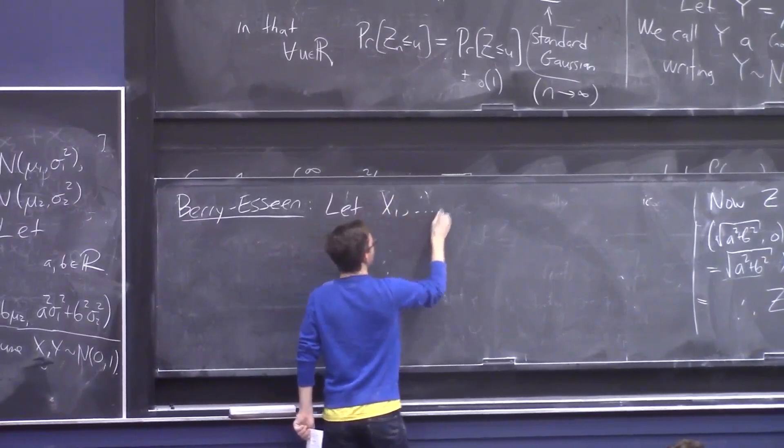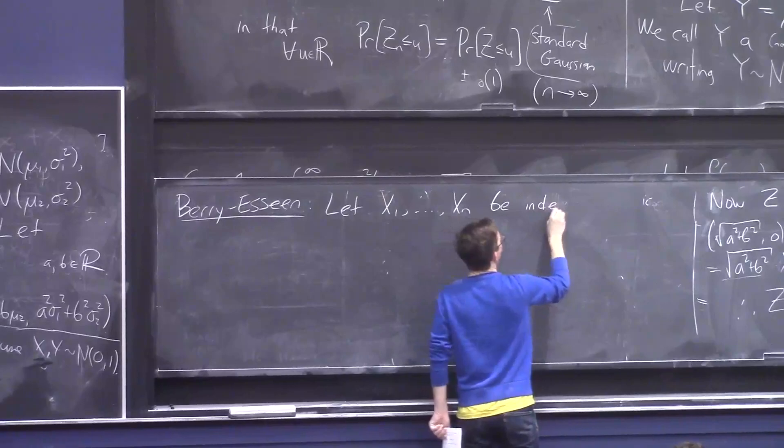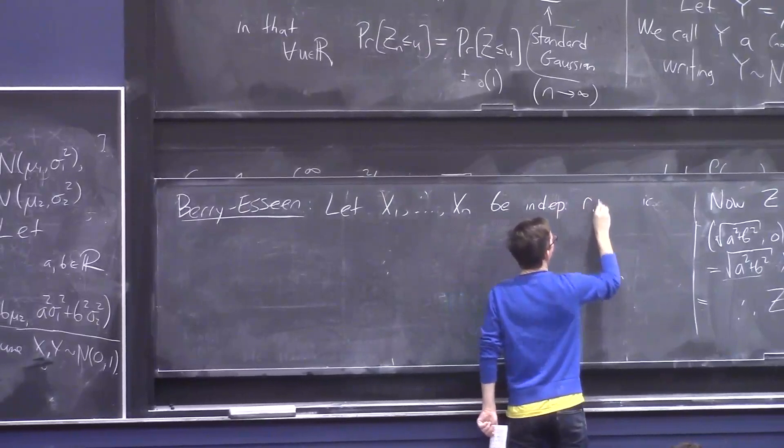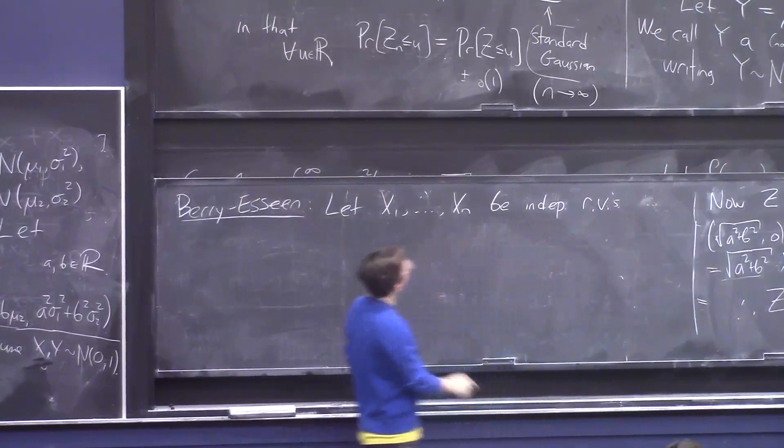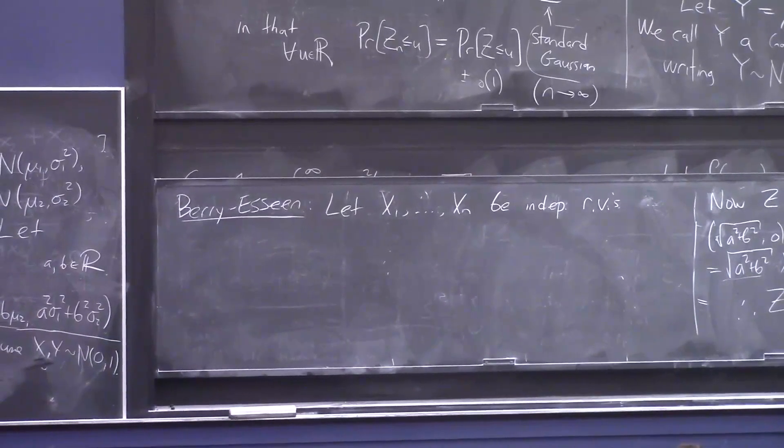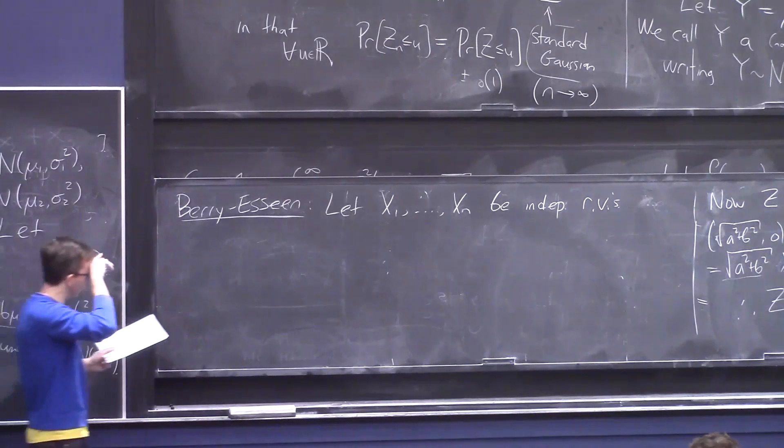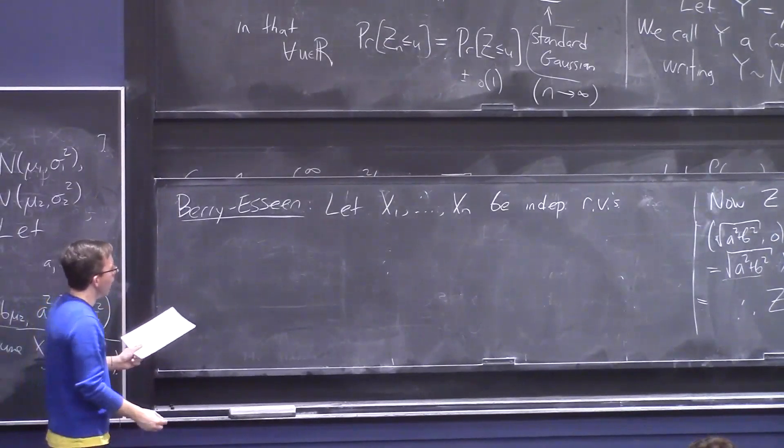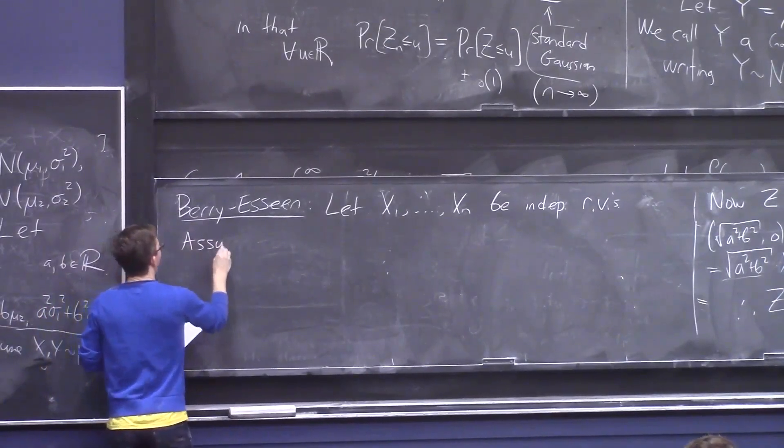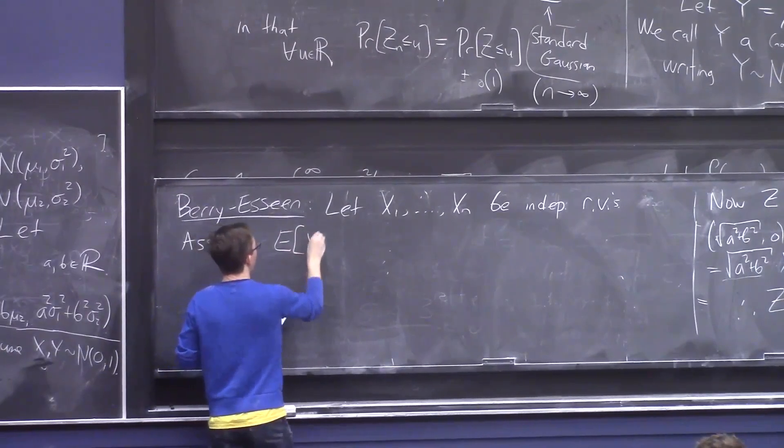Let X₁ through Xₙ be independent random variables. Okay, so first of all, unlike in the central limit theorem, they don't have to be identically distributed. Also, it's not like there are an unending sequence of them. You just have n random variables. That's the common situation in theoretical computer science. And let's assume that each of them has mean zero.